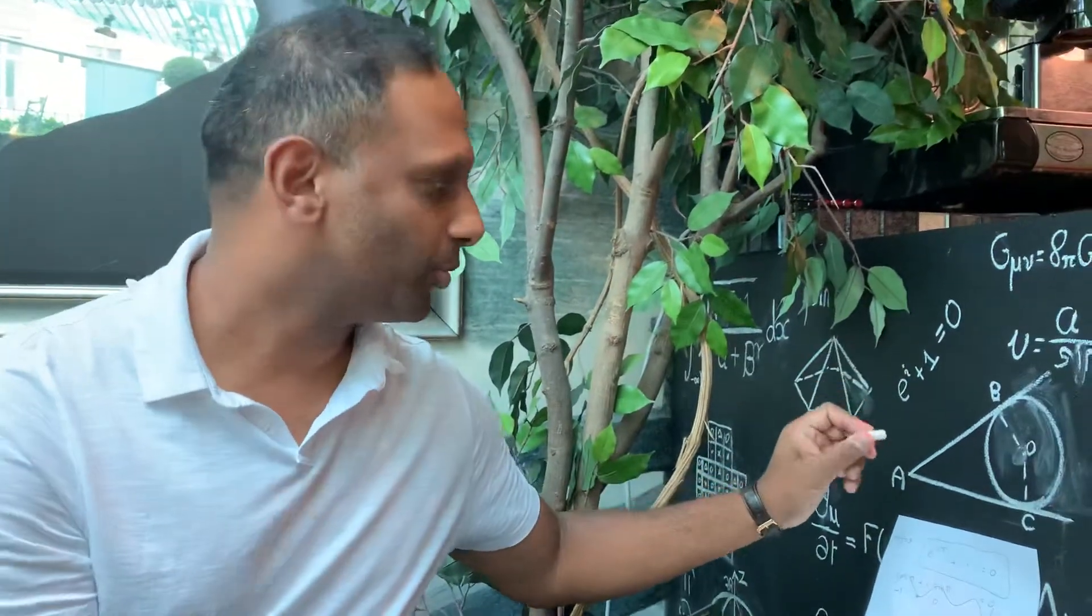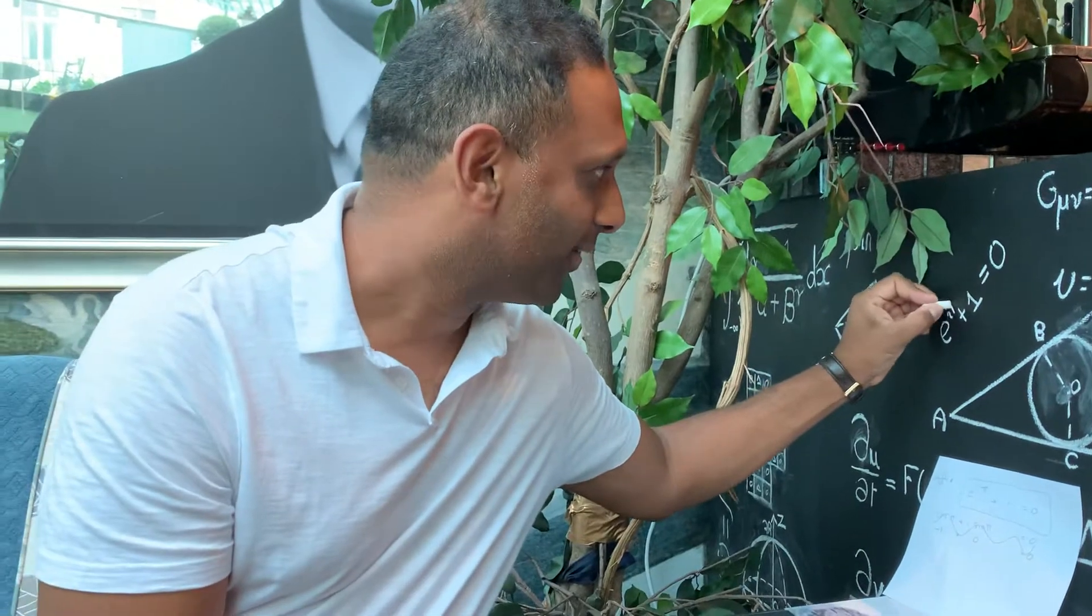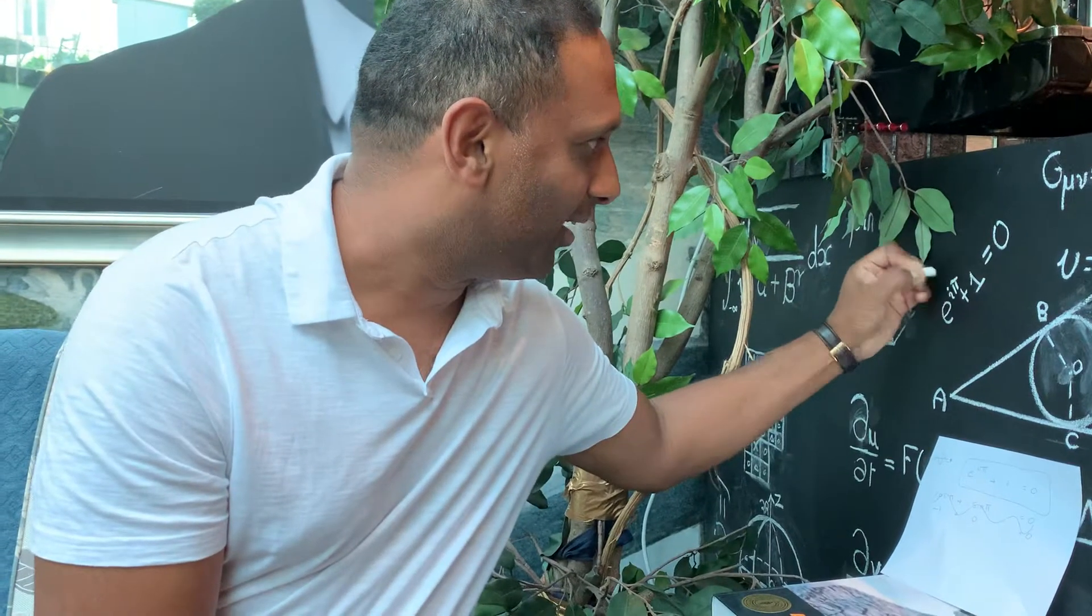So, e to the i pi plus 1 equals 0. I'm going to stick it in there. There we go. e to the i pi equals 0.